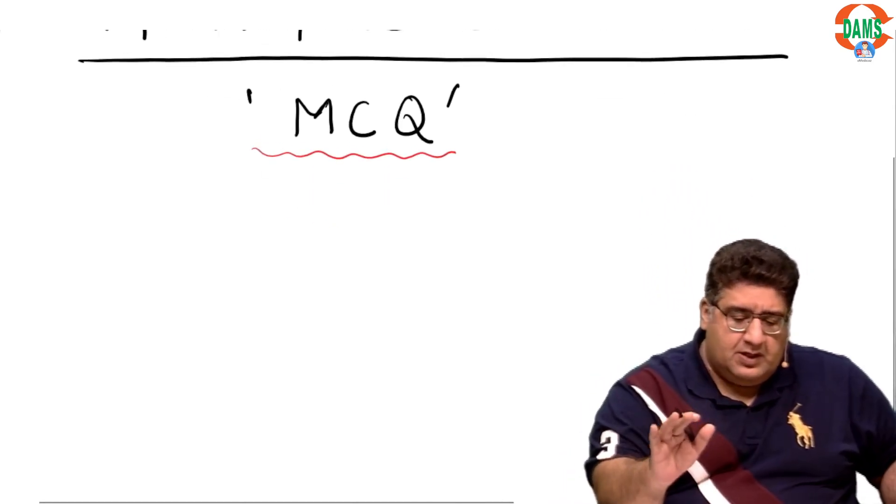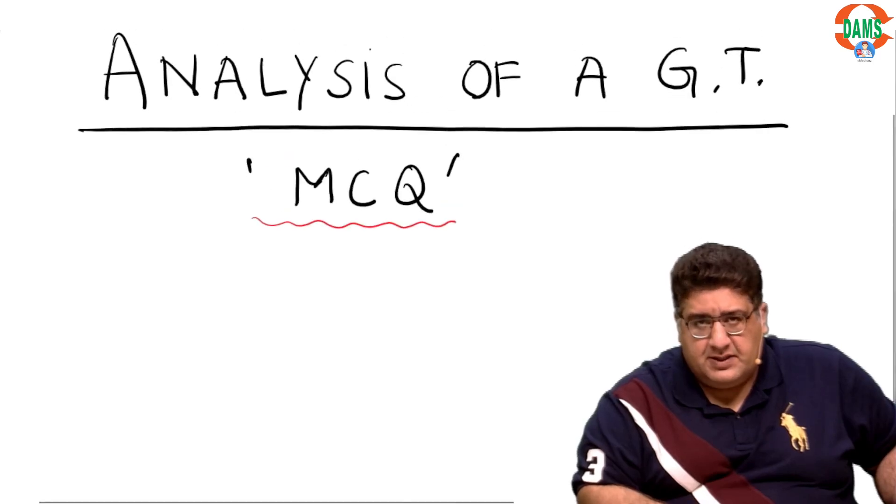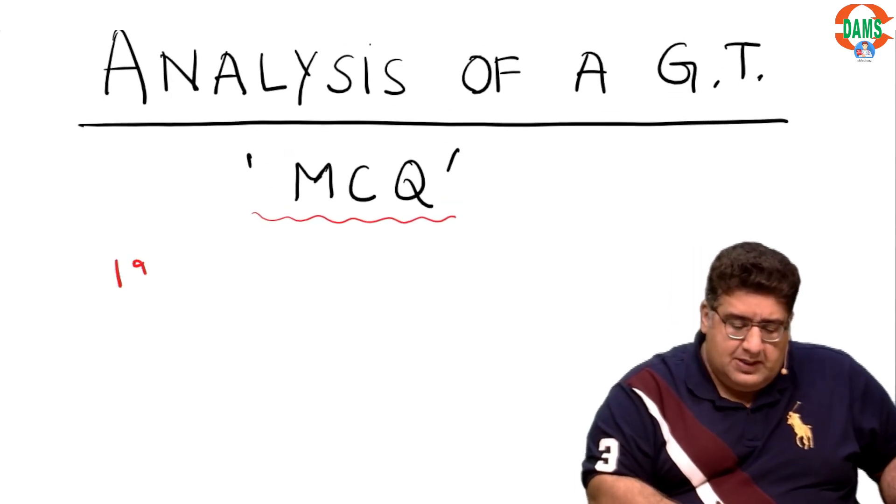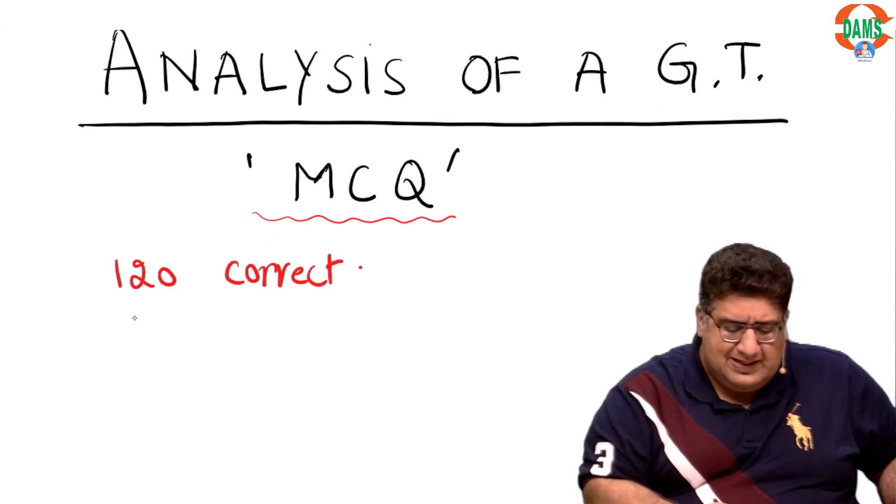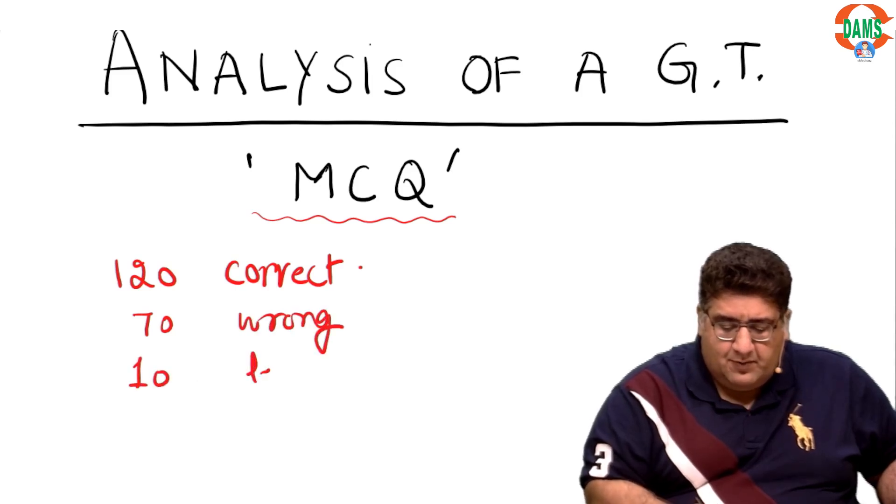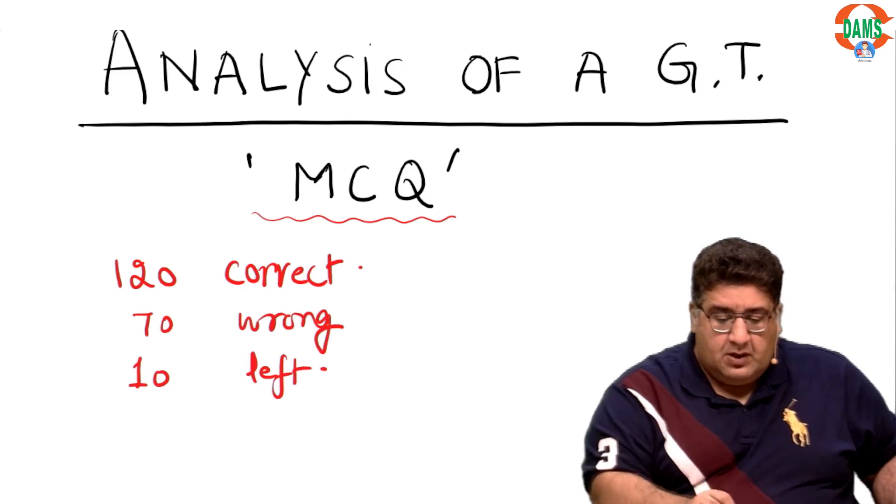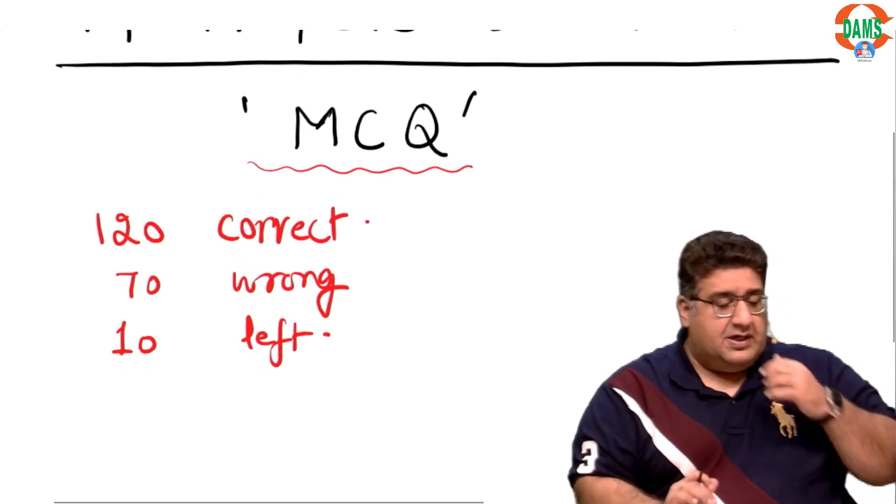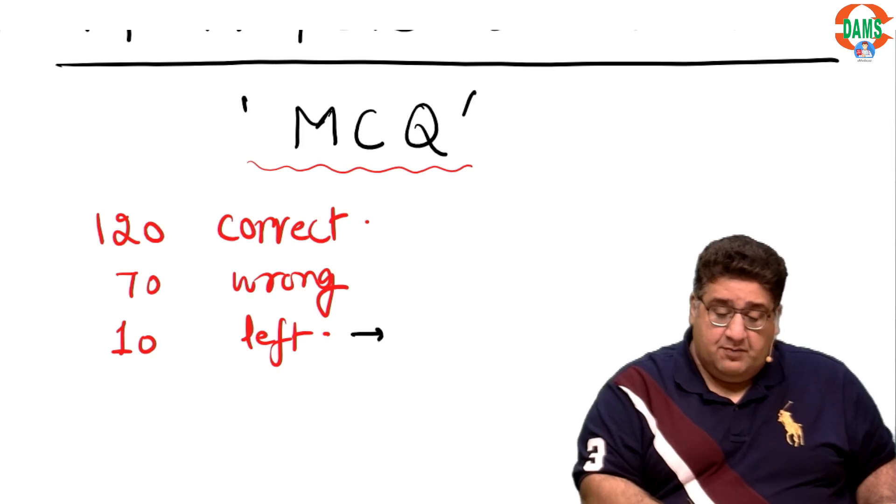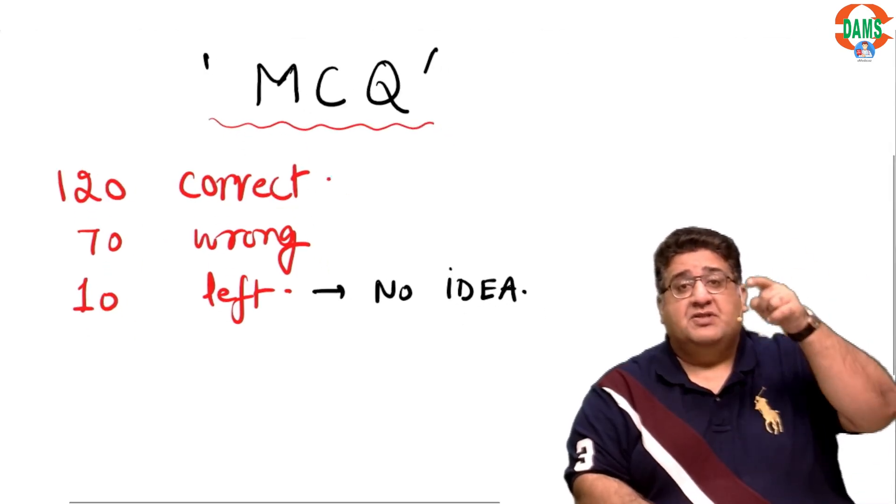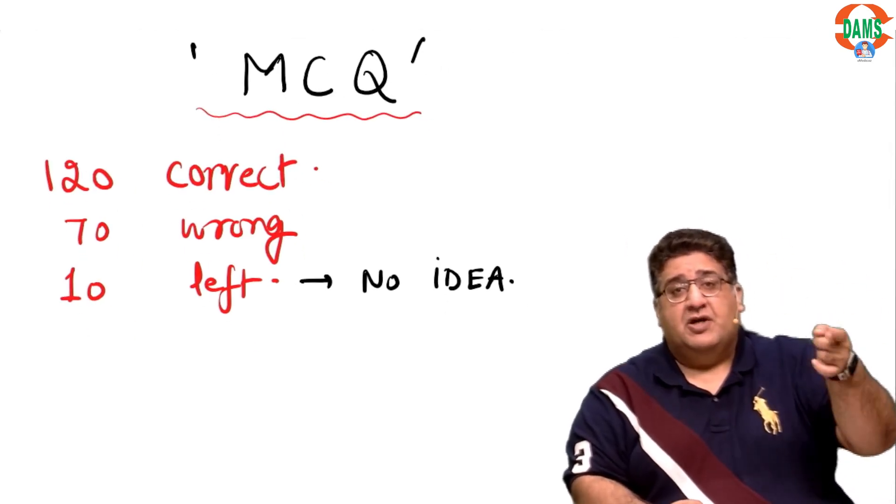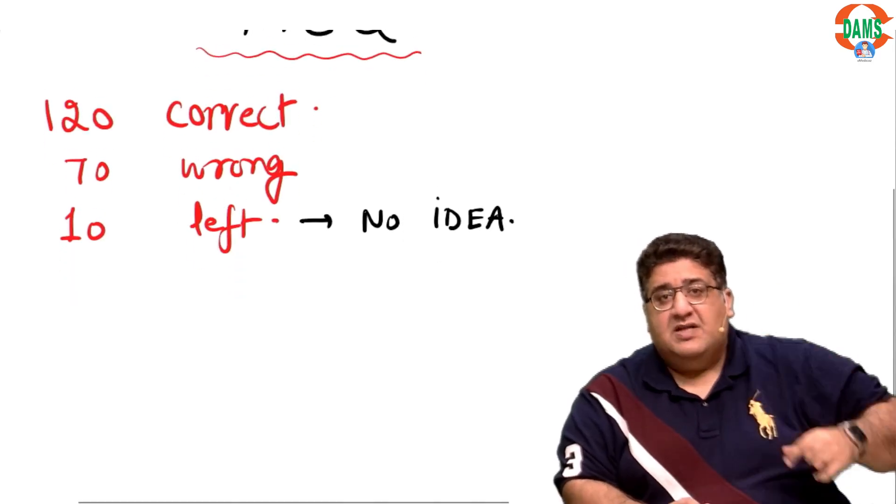Let us say, for example, you have attempted a grand test. You got 120 correct. In all fairness, you got 70 wrong, and then 10 is probably what you left. Now, there are very high chances that these 10 MCQs that you have left, maybe you have no clue about them or no clue about the subjective condition which they are representing objectively.